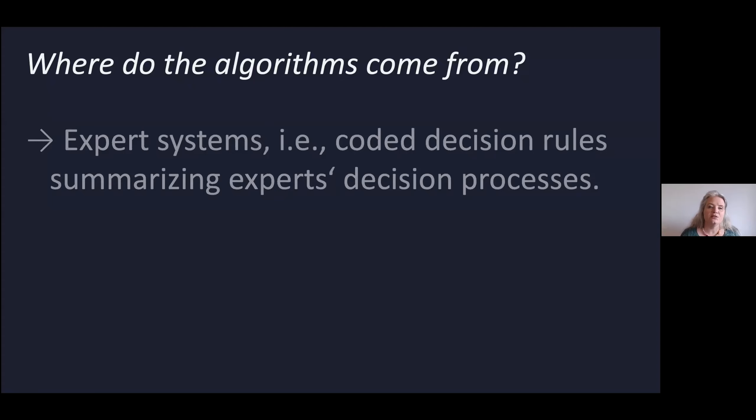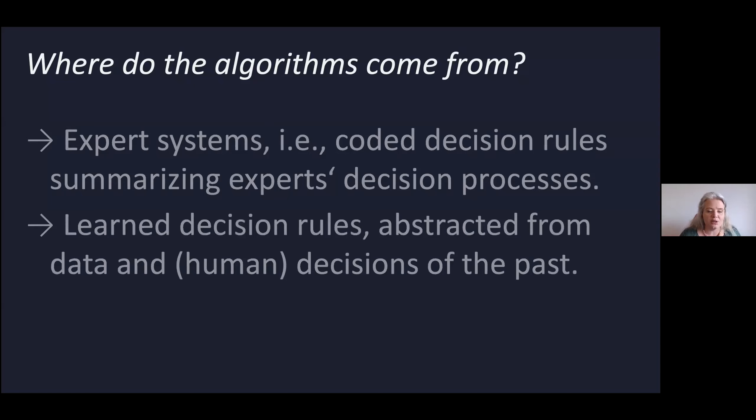Normally, these kinds of algorithms are easily inspectable. You have an idea of what the process is and could rather easily judge whether there's a discriminatory aspect to it. But today we're talking about learned decision rules, those that are abstracted from data and human decisions of the past.